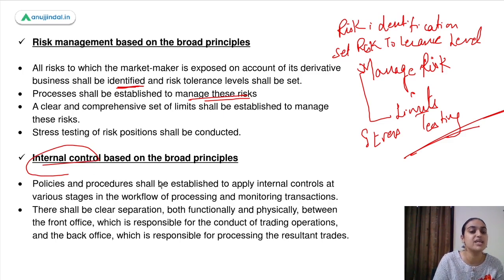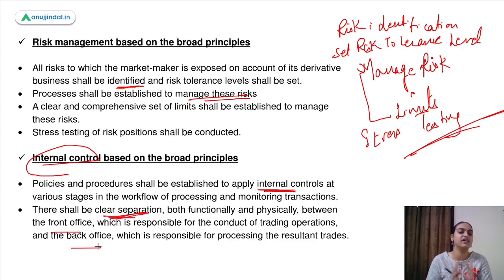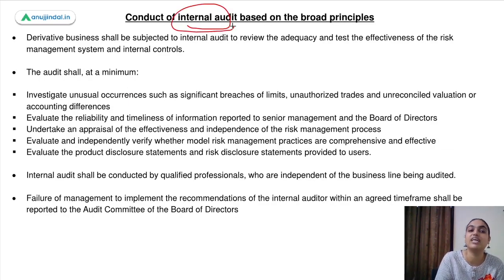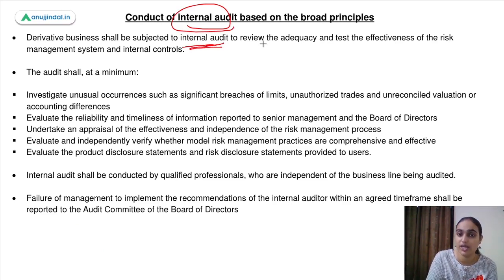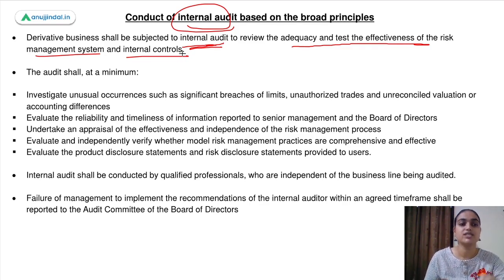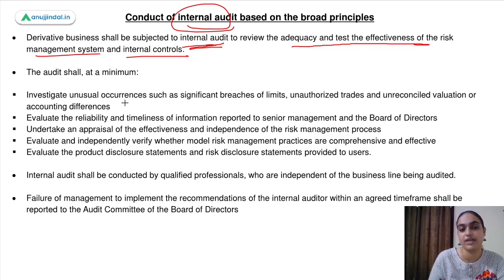Moving to internal control: policies and procedures should be established to apply internal controls at various stages of processing. There should be clear separation between the front and back office. Internal audit is also necessary — derivative businesses shall be subjected to internal audit to review the adequacy and test the effectiveness of risk management and internal controls. The audit at a minimum will investigate unusual occurrences such as breach of limits, unauthorized trades, unreconciled valuations, and accounting differences.